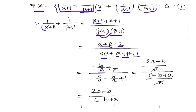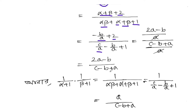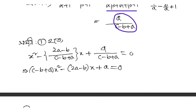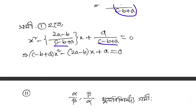So alpha plus beta is minus b by a, and alpha beta is c by a. Substituting: the sum becomes (minus b by a plus 2) over (c by a plus minus b by a plus 1). After simplification, the numerator and denominator are worked out. Then we get x squared minus (sum) times x plus (product) equal to zero — the final equation in a simplified form.